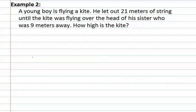Let us first draw the boy holding the kite. The boy has the kite and it says that he let out twenty-one meters of string, which means that we have twenty-one meters of string out and a kite. Next, it says that it is flying over the head of his sister, so his sister is located underneath the kite.